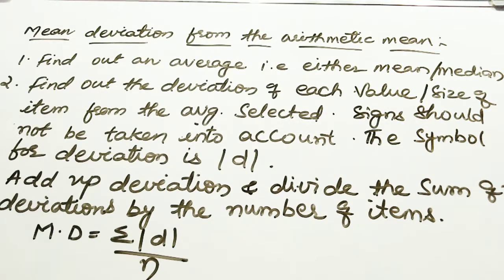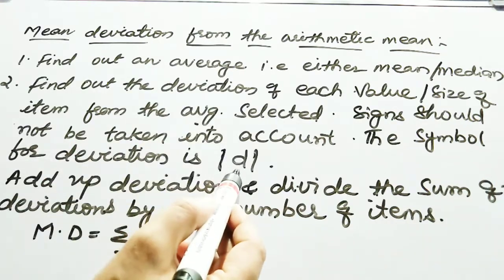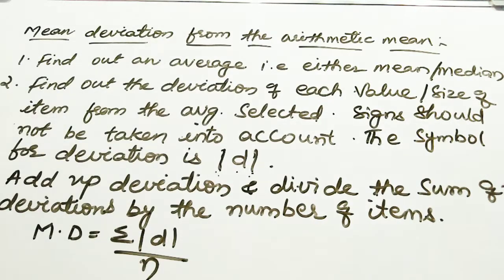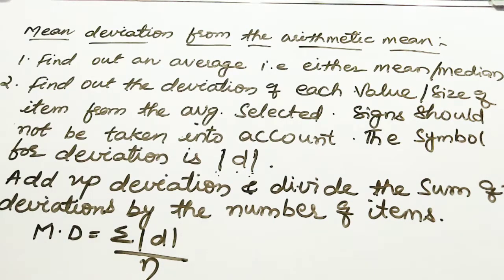Sign should not be taken into consideration. If it is plus or minus, it will be taken as plus only. Sign should not be taken into account. The symbol for deviation is mod D — you see this standing line with D between them. After taking the deviation, you have to add up the deviations using your formula. The formula for mean deviation is: summation mod D by N, that is, sum of the deviations divided by number of items.